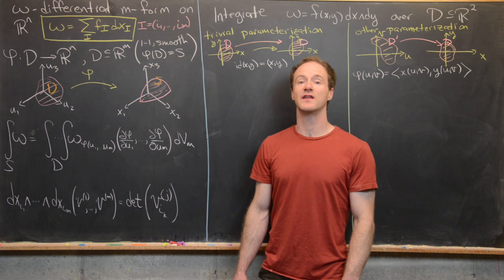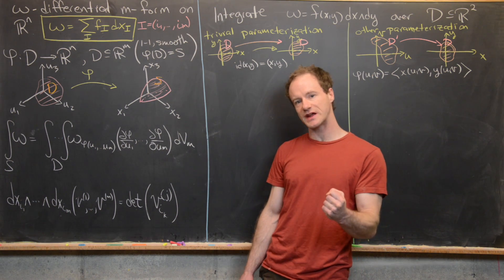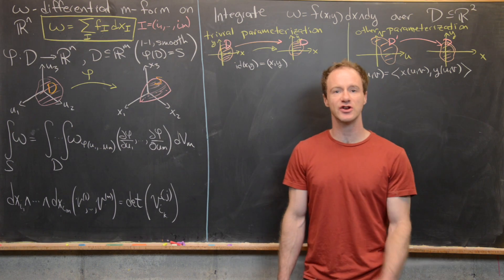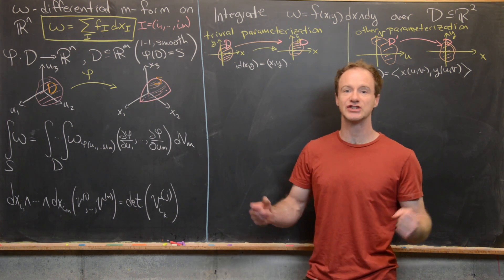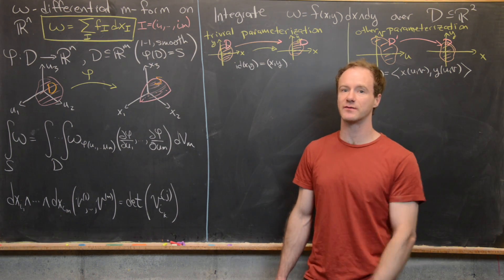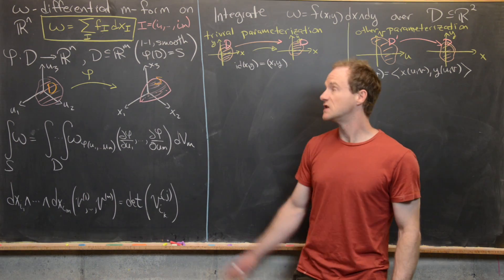Here we're going to apply the notion of an integral of a differential M-form on Rn to understand the change of variables formula in two variables a little bit more deeply.